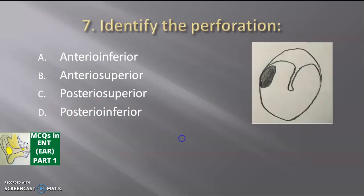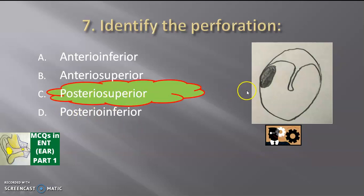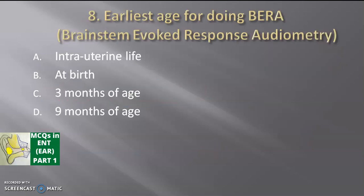Next, identify the perforation in the tympanic membrane. The black colored area is the perforation — in which quadrant: anterior inferior, anterior superior, posterior superior, or posterior inferior? The answer is posterior superior. Dividing the tympanic membrane into four quadrants, this perforation is posterior superior. This is a dangerous type of CSOM (chronic suppurative otitis media), so it is important to identify and refer to the ENT surgeon at the earliest.